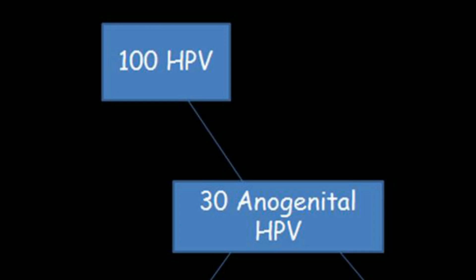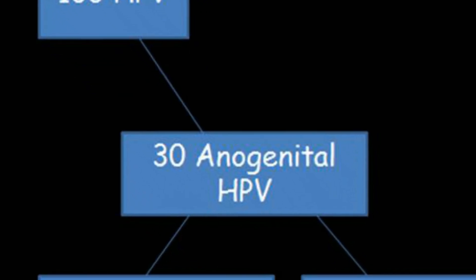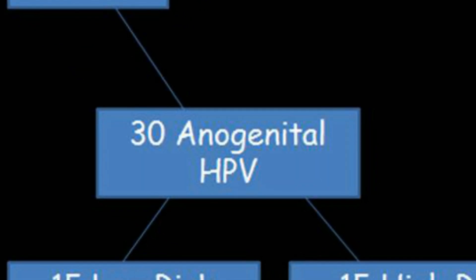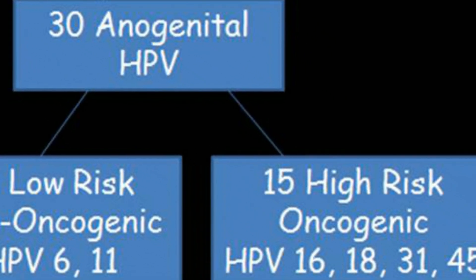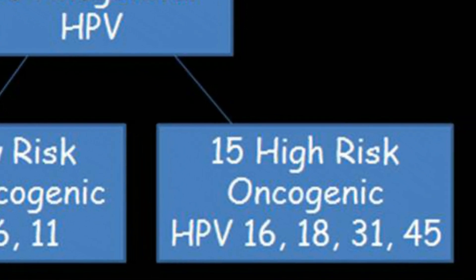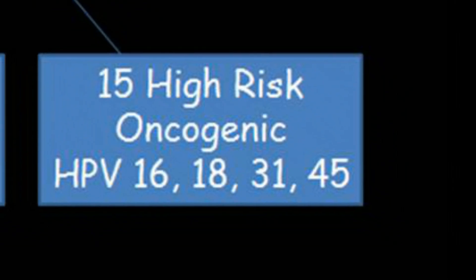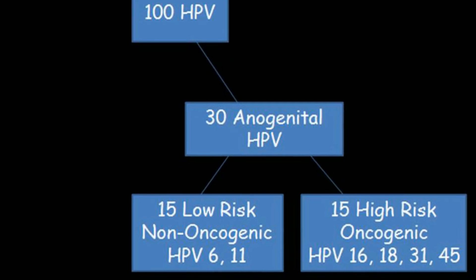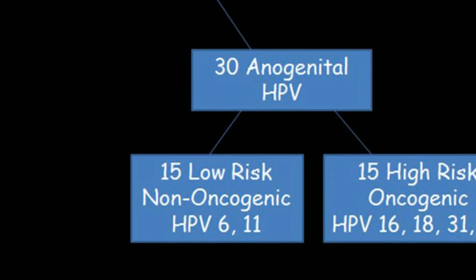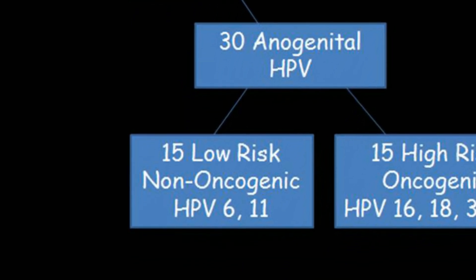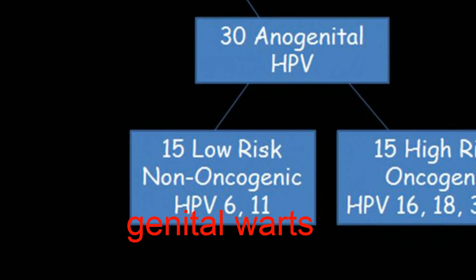There are over 100 types of HPV and 30 affect the anal genital tract. Fifteen of these 30 are high-risk HPV types, and the majority of cervical cancers are caused by four of these: 16, 18, 31, and 45. Low-risk HPV types are not associated with cancer; low-risk types 6 and 11 are associated with genital warts.